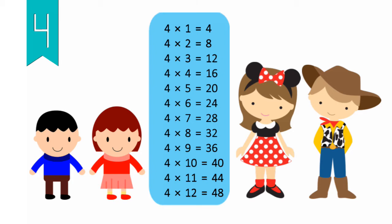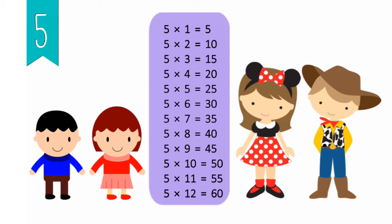5 x 1 equals 5, 5 x 2 equals 10, 5 x 3 equals 15, 5 x 4 equals 20, 5 x 5 equals 25, 5 x 6 equals 30, 5 x 7 equals 35, 5 x 8 equals 40, 5 x 9 equals 45, 5 x 10 equals 50, 5 x 11 equals 55, 5 x 12 equals 60.